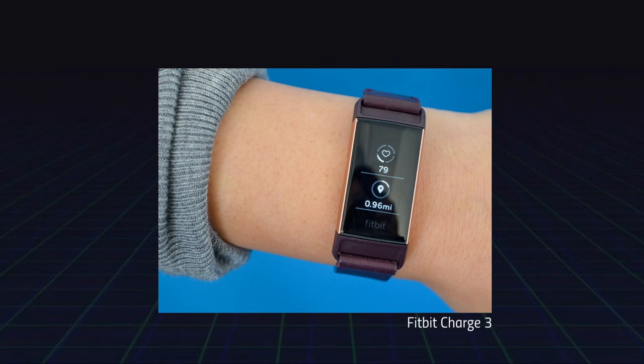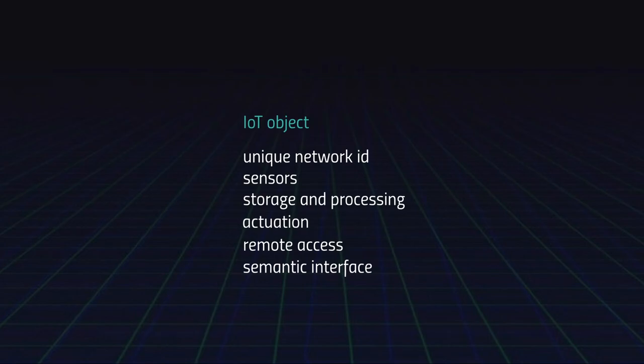Another example: your typical Fitbit — which again fits all of these categories: it has a semantic interface, it is connected to the internet, and so on. So all of these categories of objects are always already part of this nascent emergent new evolutionary stage of the internet — the Internet of Things. They all have a unique network ID, some sort of sensor to detect and extract information from the environment, the ability to store and process information, actuation based on local or remote commands, remote access to the environment, and a semantic interface for humans.